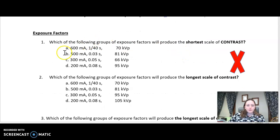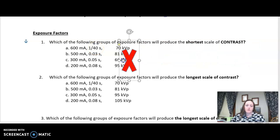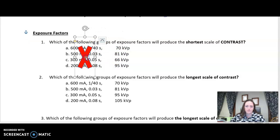Our first question deals with the groups of factors that will produce the shortest scale of contrast. What is our key player for contrast? If you said KVP, you are correct. So it is giving you MA and time. Do I care about MA and time for contrast? No. MAS has no effect on contrast. So ignore it. It's called a distractor. It's there for fun, just to bother you.